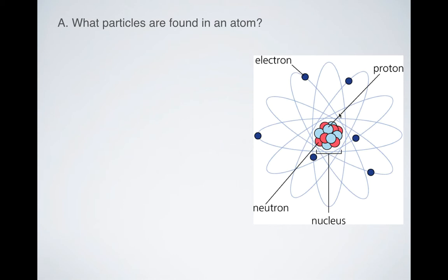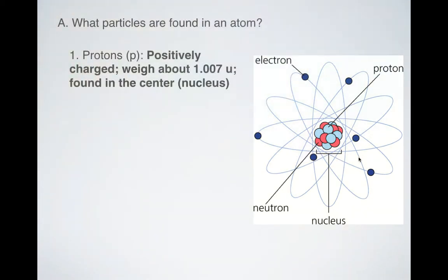So what are those particles that are found in there, and what do they do? Protons, neutrons, and electrons. Well, the first thing you need to be aware of are the protons, which we sometimes just abbreviate as a lowercase p, are positively charged. They weigh 1.007 atomic mass units, that's what U stands for, and they're found right in the center of the nucleus of your atom.